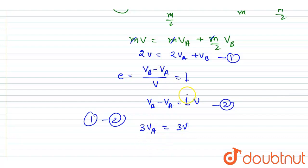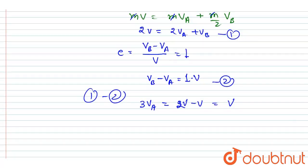So we got vA equals v/3. Now you just put the value of vA in any of the equation 1 or 2 to get the vB.